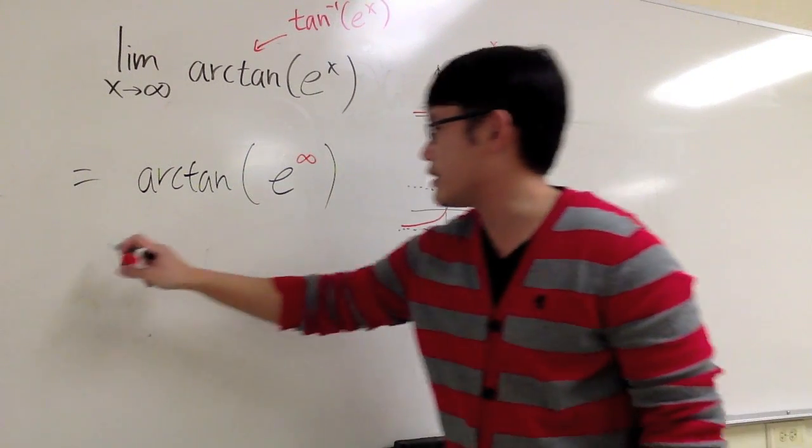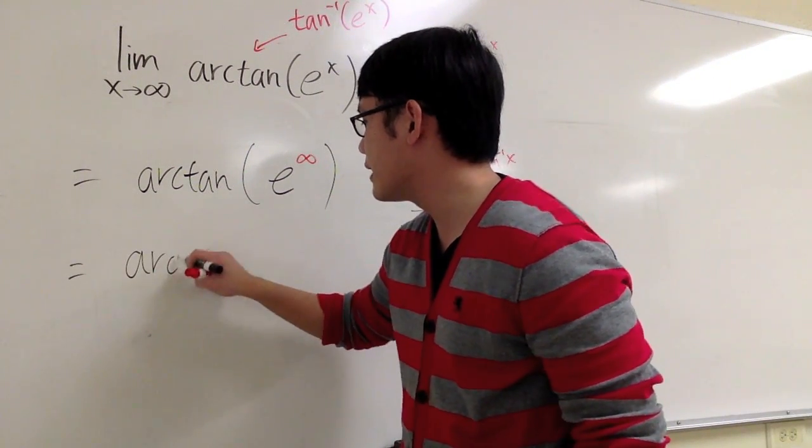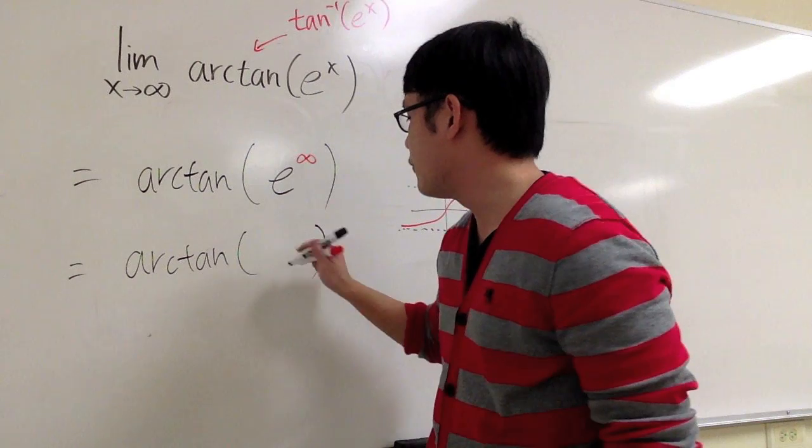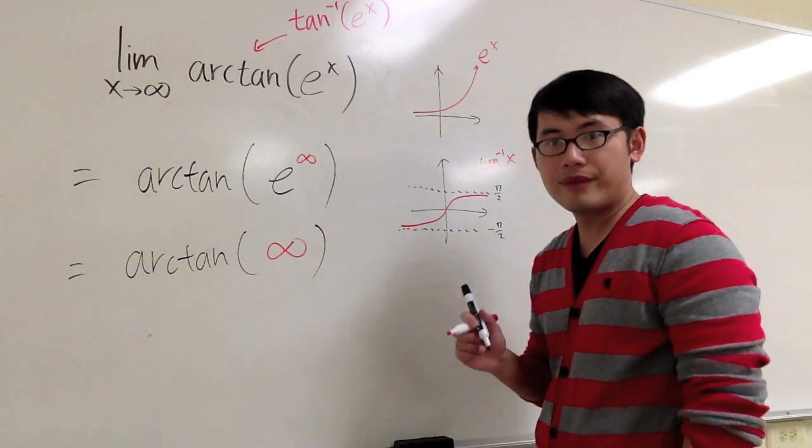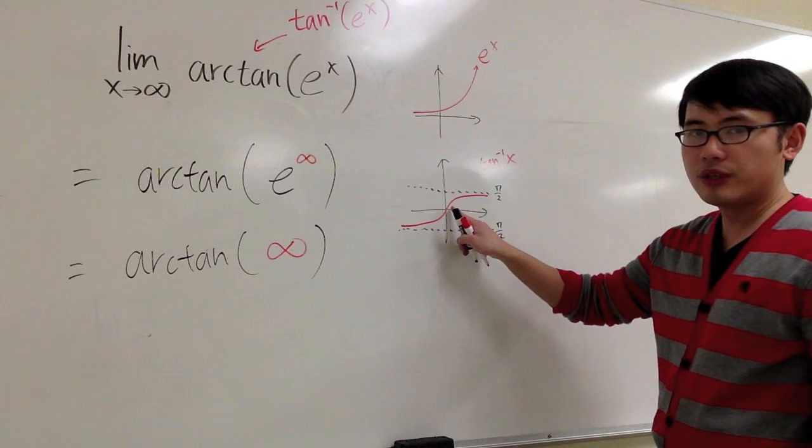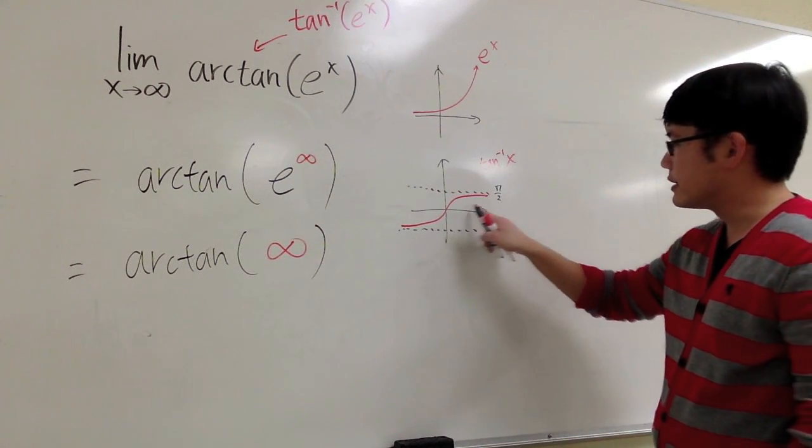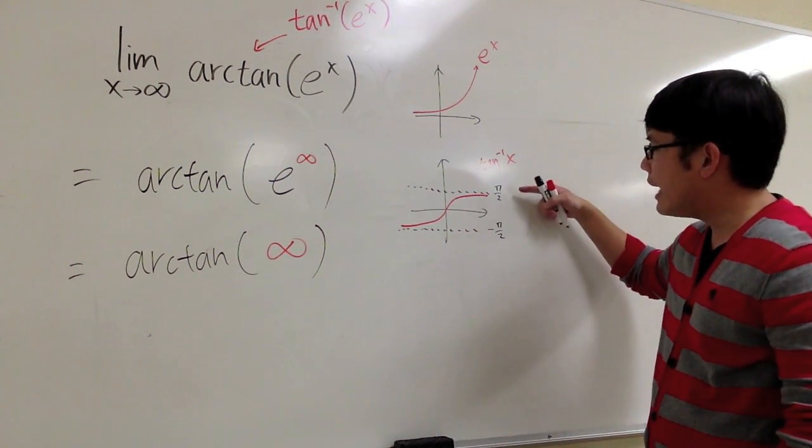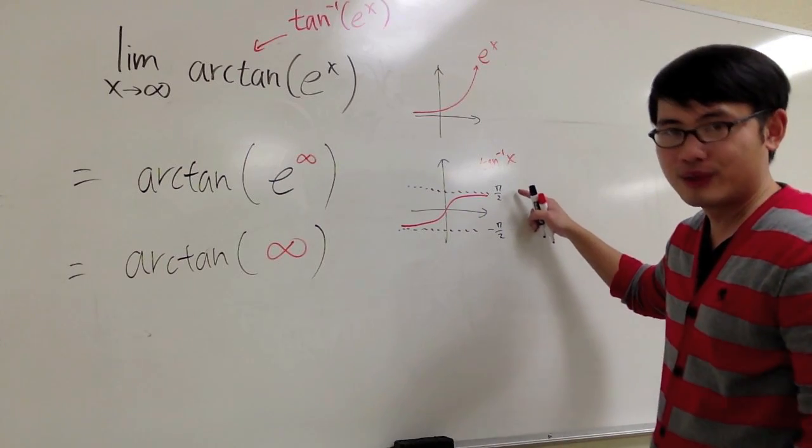So in other words, I'm trying to get what's arctangent of infinity. When you have arctangent of infinity, that means you are looking at when x is far away to the right, and it actually has a horizontal asymptote at pi over 2.